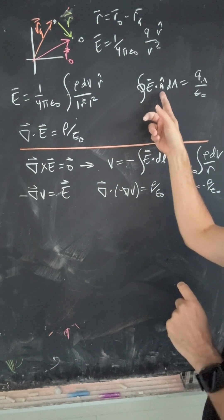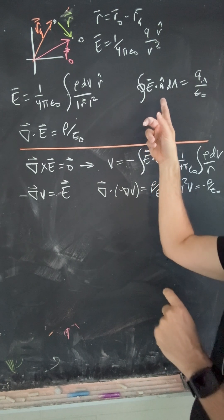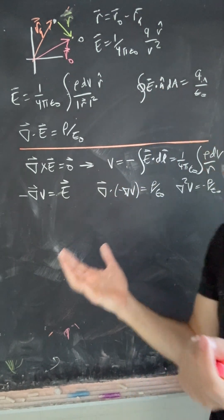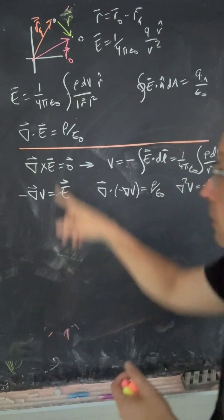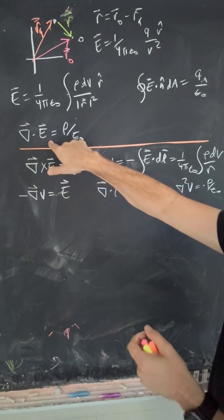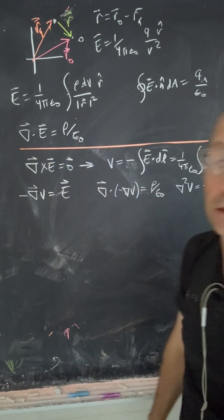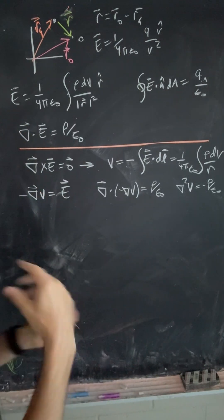This is Gauss's law. This says that if I pick some flux over some imaginary surface that's related to the total charge enclosed in that surface, and that's the differential form of that, which says that the divergence is dependent on the charge density.